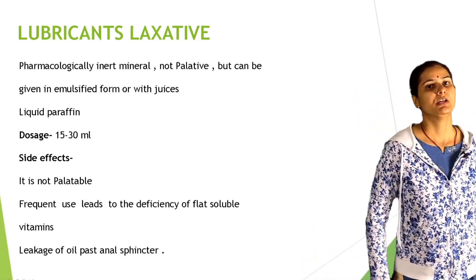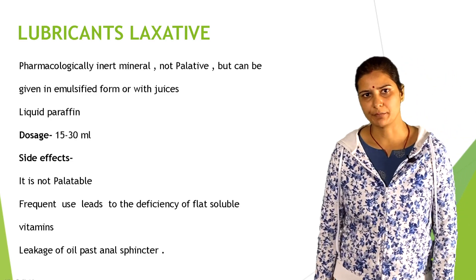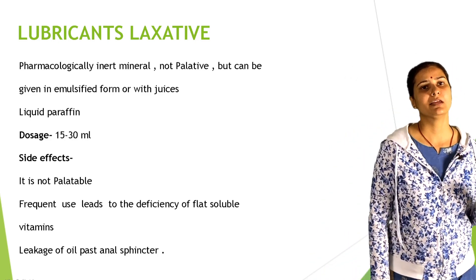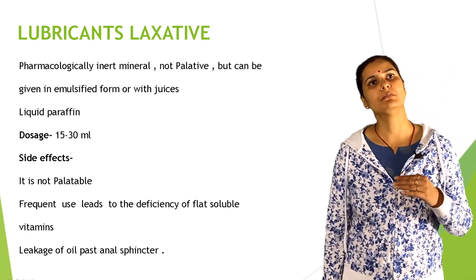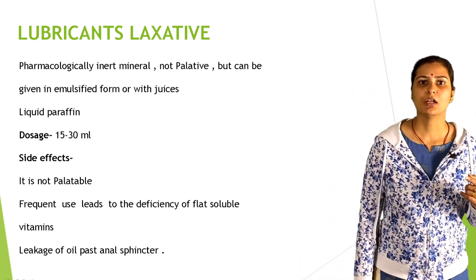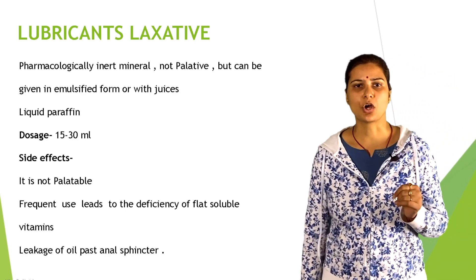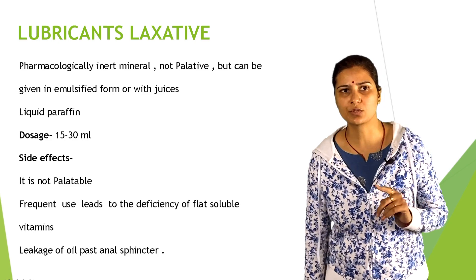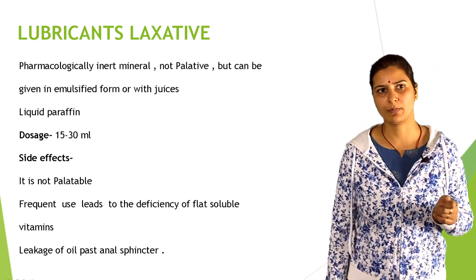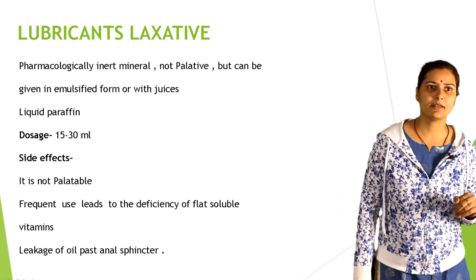Third: lubricant laxatives. A lubricant laxative is a pharmacologically inert mineral, not palatable but can be given in emulsified form or with juices. Example: liquid paraffin. Dose: 15 to 30 ml. Side effects: it is not palatable, and frequent use leads to deficiency of fat-soluble vitamins and leakage of oil past the anal sphincter.